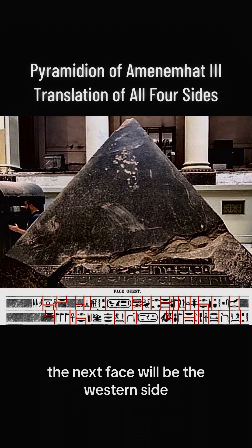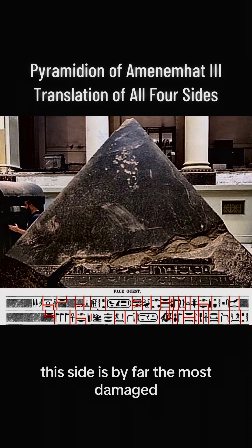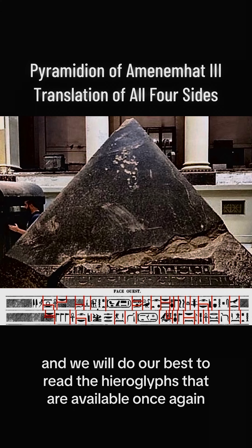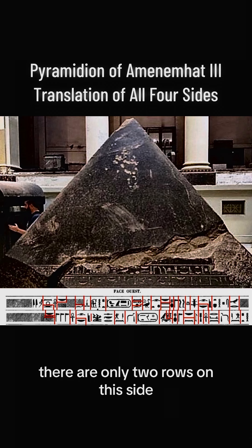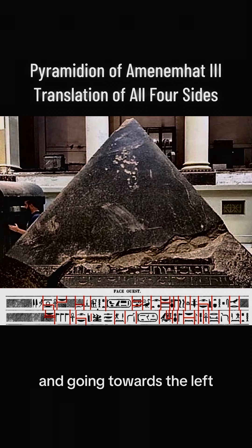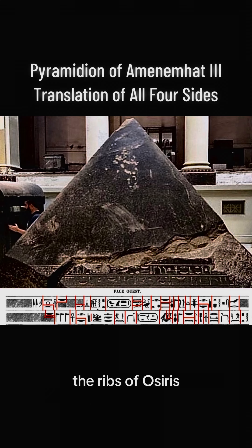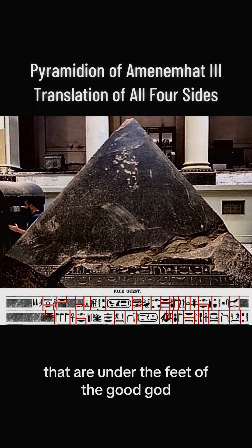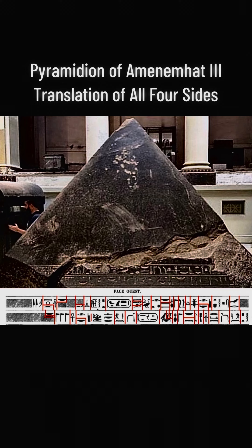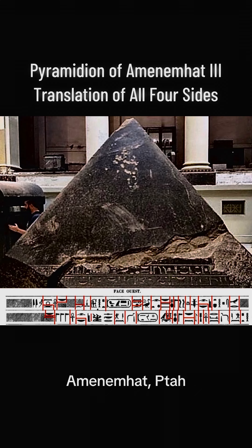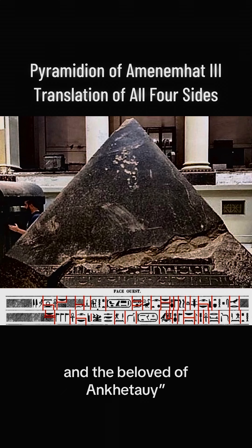The next phase will be the western side. This side is by far the most damaged, and we will do our best to read the hieroglyphs that are available. There are only two rows on this side, and both rows start from the right going towards the left. Starting from the top row from the right: The great one, the ribs of Osiris, lord of the Thinite nome, that are under the feet of the good God, the lord of the two lands and of doing, the son of Ra of his body, Amenemhat. Ptah, who is south of his wall, the lord of truth and the beloved of Akhetaaui, which means the living two lands.